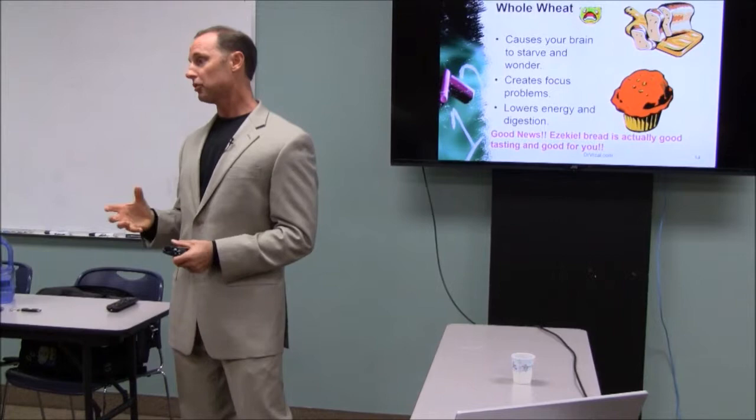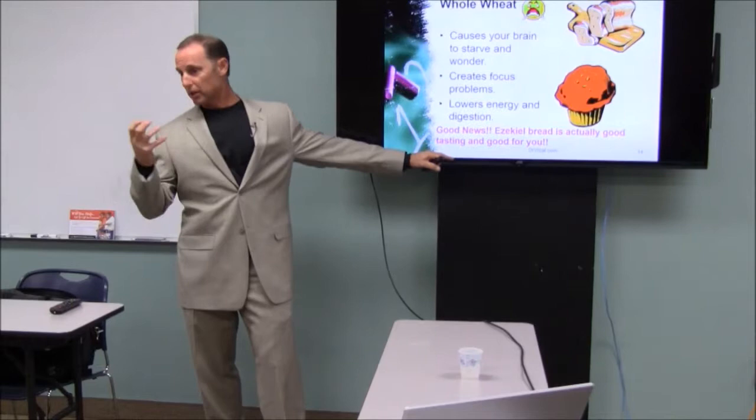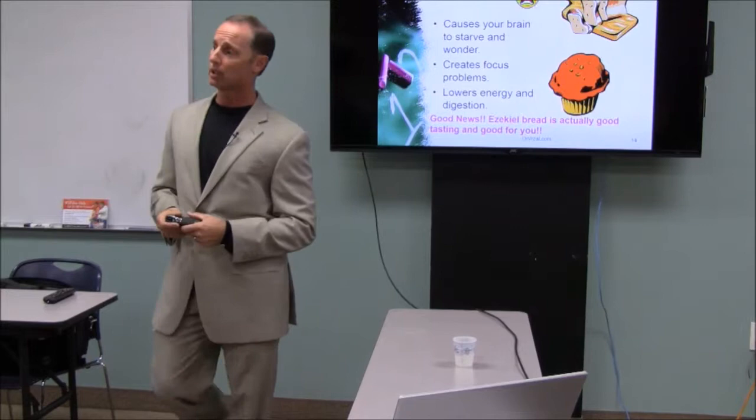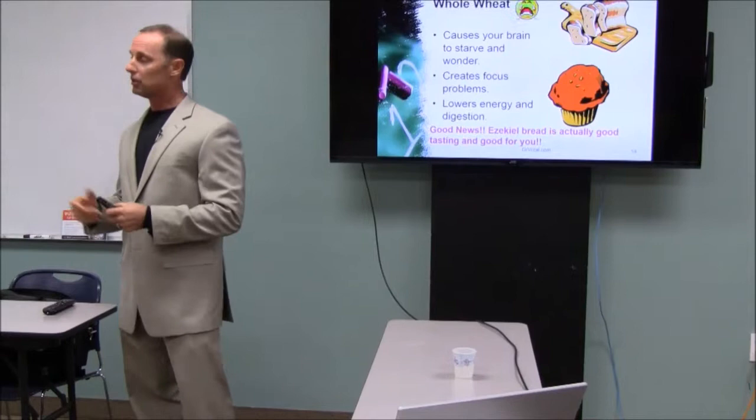Better alternatives from a bread perspective is Ezekiel bread. Because that is a live sprouted grain bread. So when it's sprouted and alive like that, it still has the enzymes in there so we can digest it and metabolize it. Spelt is another option that at this point is still relatively neutral, and it's one of the lowest gluten containing grains.